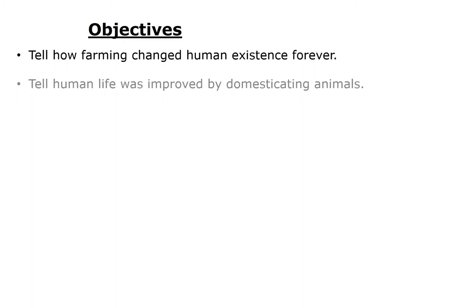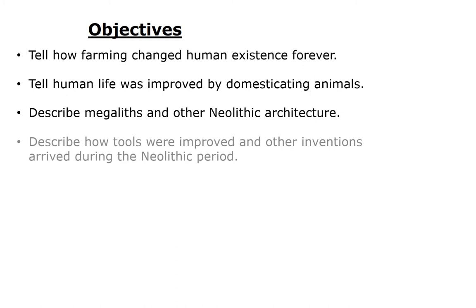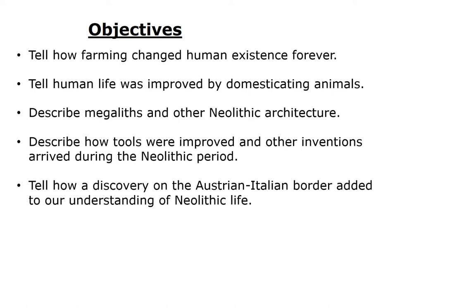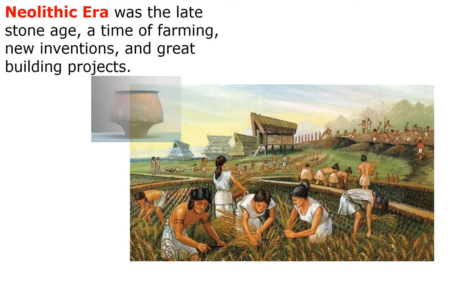Your objectives for this lesson: tell how farming changed human existence forever; tell about how human life was improved by domesticating animals; describe megaliths and other Neolithic architecture; describe how tools were improved and other inventions that arrived during the Neolithic period; tell how a discovery on the Austrian-Italian border added to our understanding of Neolithic life; and tell how Gobekli Tepe changed prehistory.